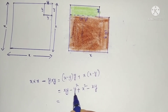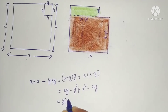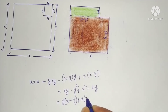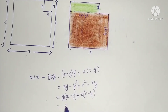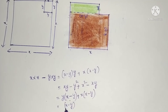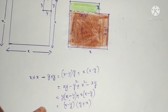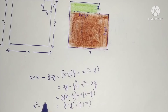In this expression, I take y as common from the terms containing y: y into (x minus y). Similarly, I take x as common from the other terms: x into (x minus y). Now taking (x minus y) as common, the remaining factor is y plus x.